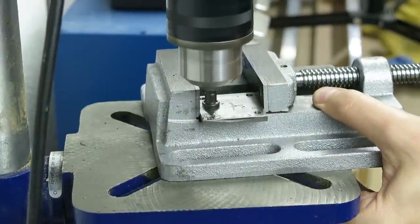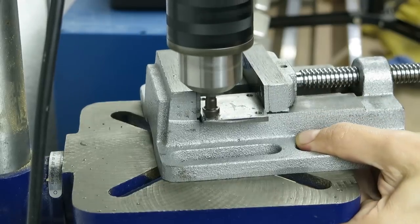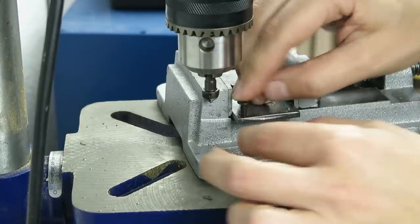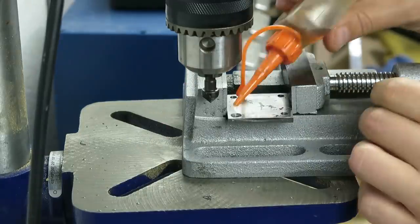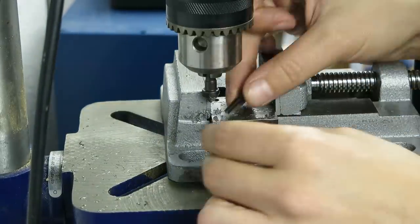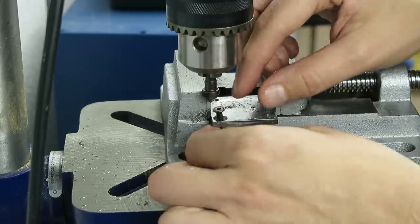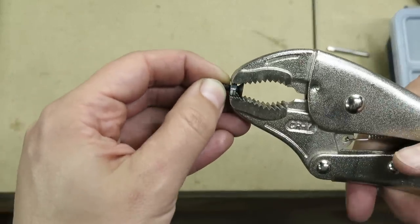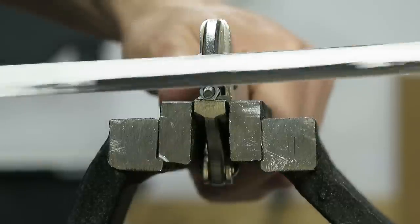For the top of the steel plate, there is also the need to use a countersink bit, but this time to accommodate the bolt head. Since the bolts were too long, I had to cut them using a handsaw.